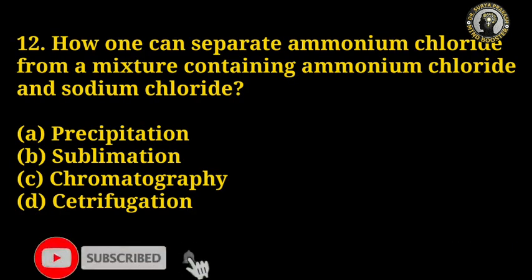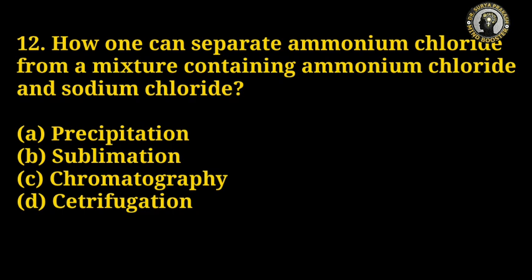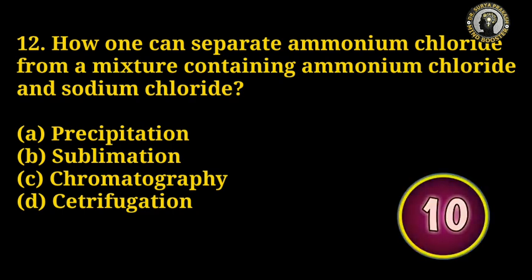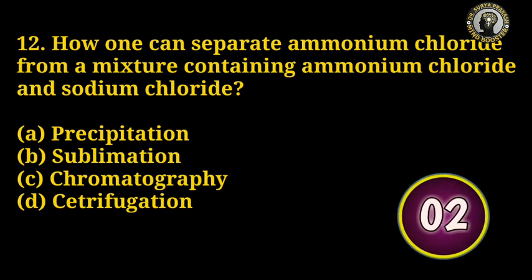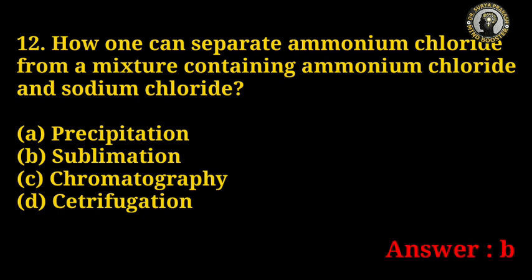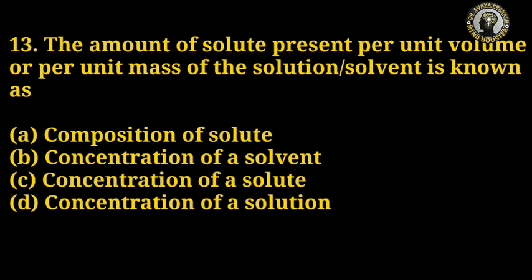Question number 12: How can one separate ammonium chloride from a mixture containing ammonium chloride and sodium chloride? Options: precipitation, sublimation, chromatography, centrifugation. The right answer is B — sublimation.